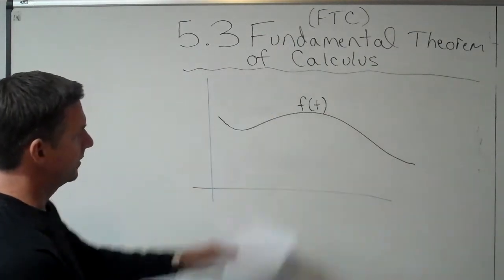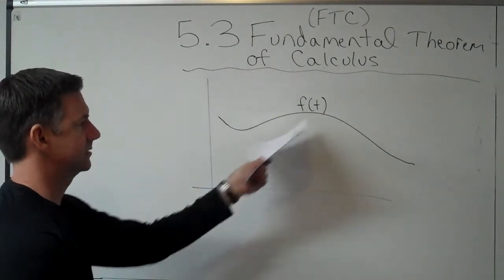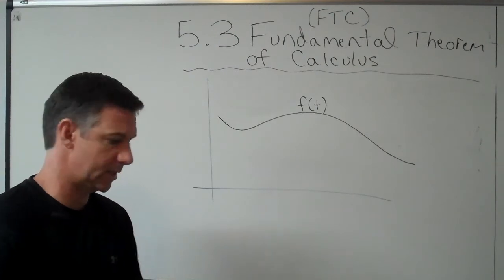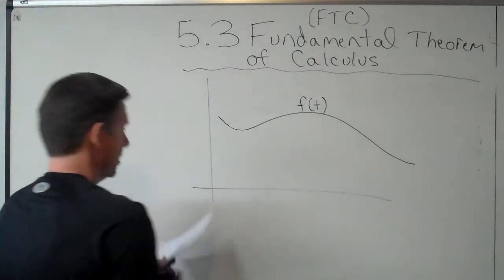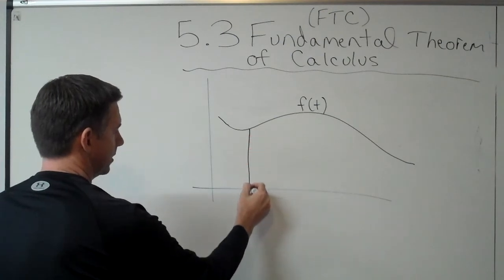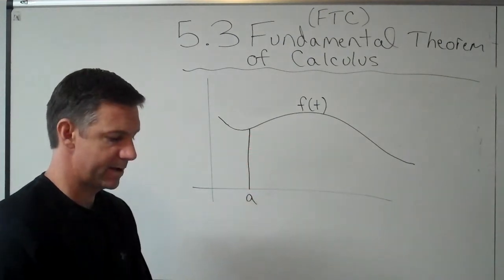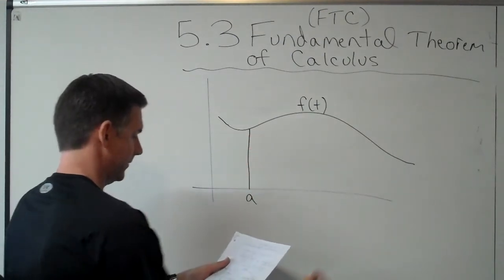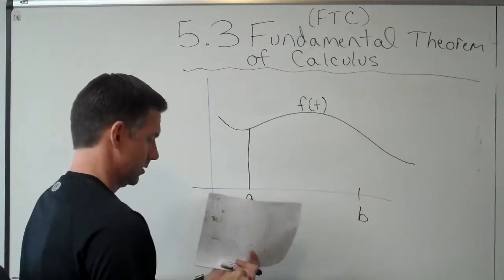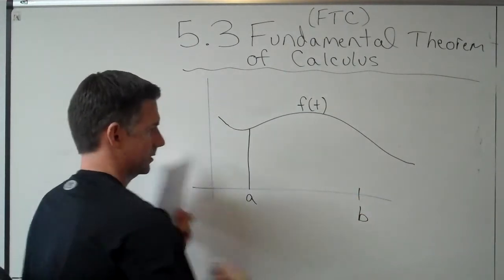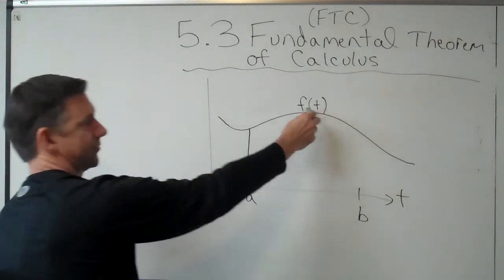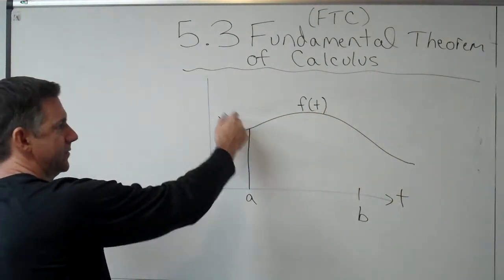First of all, I've got a graph and I'm going to say I've got this function. I'm going to call it f of t. And I'm going to find the area from A — let's say I've got B over here. This x-axis, this is t. That's why this function is f of t.